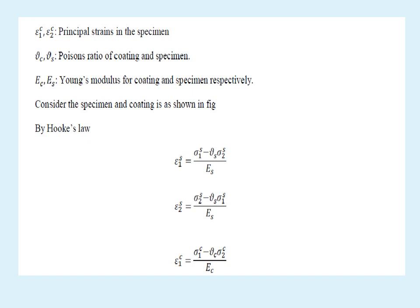ε₁c and ε₂c are the principal strains in the coating specimen. νc and νs are the Poisson's ratio of the coating and specimen respectively. Considering the specimen and the coating in the figure by applying Hooke's law, ε₁s = (σ₁s - νs·σ₂s)/Es. Similarly, ε₂s = (σ₂s - νs·σ₁s)/Es where νs is the Poisson's ratio for the specimen. Similarly, ε₁c = (σ₁c - νc·σ₂c)/Ec.